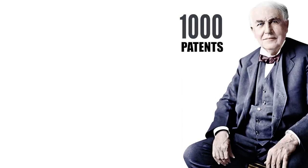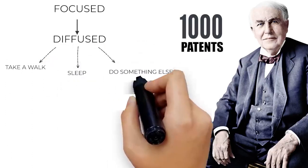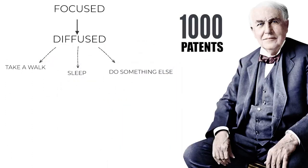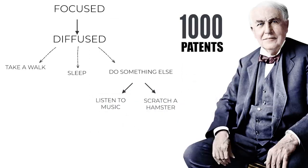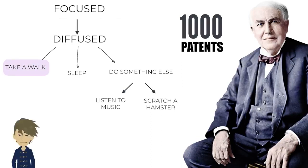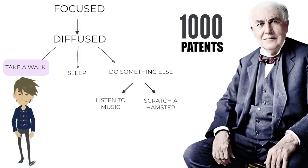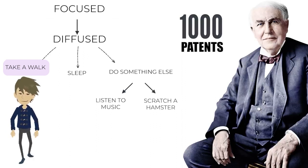For most people, the transition from one type of thinking to another occurs naturally. It's enough to go for a walk, sleep, or do something that involves other parts of the brain, such as listening to music or scratching the stomach of a hamster. The main thing is to distract the brain from the task until it fades. Inspiration has come to many famous writers during long walks, because at this time diffused thinking comes into play, and thought runs over a wide space until it finds a solution.